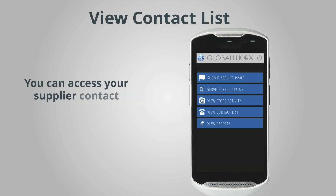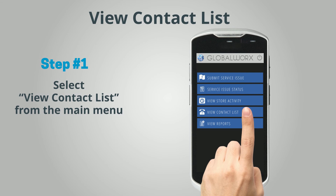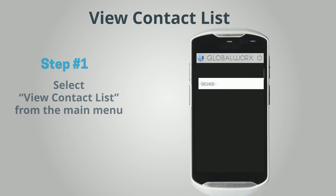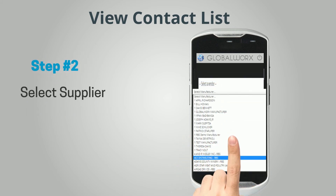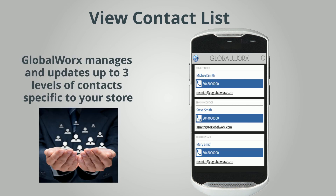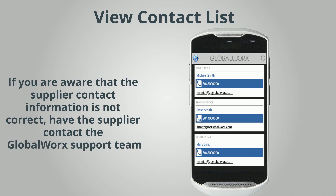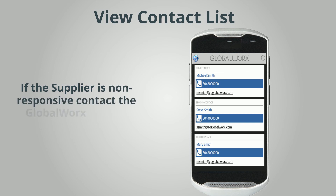View Contact List. You can access your supplier contact information. Step 1: Select View Contact List from the main menu. Step 2: Select the supplier. Global Works manages and updates up to three levels of contact specific to your store. If you are aware that the supplier contact information is not correct, have the supplier contact the Global Works support team. If the supplier is non-responsive, contact the Global Works hotline.